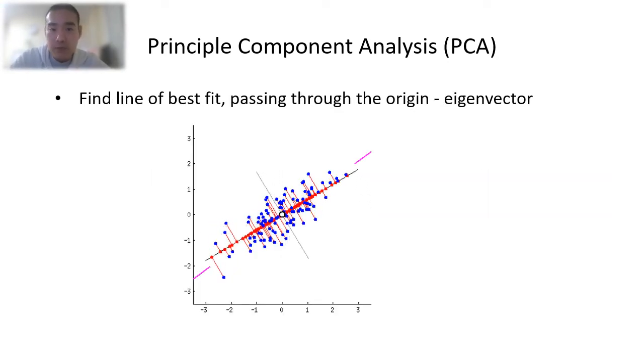So how do we calculate the Principal Component? Here is a visualization of the process, and we are using two dimensions as an example. Assume each blue dot represents a data point, and the red dots on the line are their projections. Geometrically speaking, Principal Component represents the directions of the data that explain a maximum amount of variance, which means in this case, the line that captures the most information of the data, which means the line in which the red dots are the most spread out. So we can see it's approximately the line that matches the purple marks. We call this the Eigenvector.